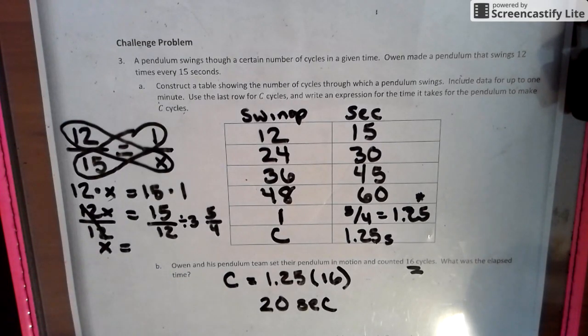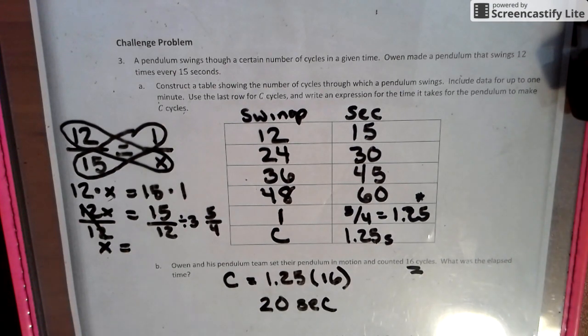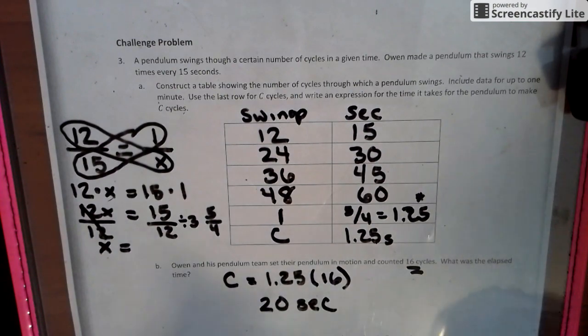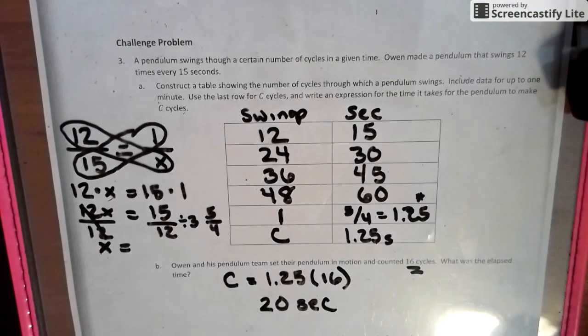We can make up another equation and we could put the seconds multiplied by the cycles of the given will equal what we want if we want to go farther into it. But I think this should make sense.